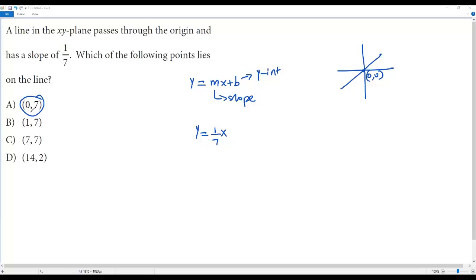First, let's take the point (0, 7). To check whether this point lies on the line, we plug in 0 for x and 7 for y. Plugging in these values: 7 = (1/7)(0), which gives 7 = 0. This is a false statement, so the point in option A does not lie on this line.